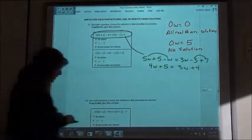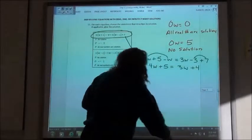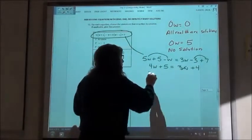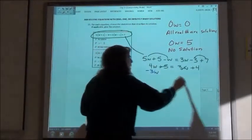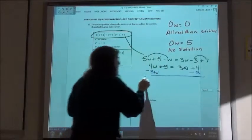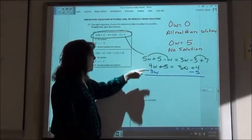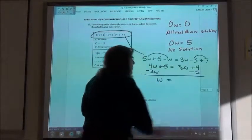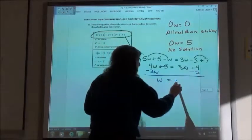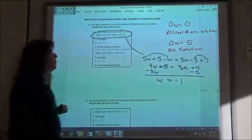I'm going to just keep going and solving it. So if I'm going to solve that, I get a minus my 3w and minus my 5. So 4w minus 3w is just 1w or w. 4 minus 5 is negative 1.